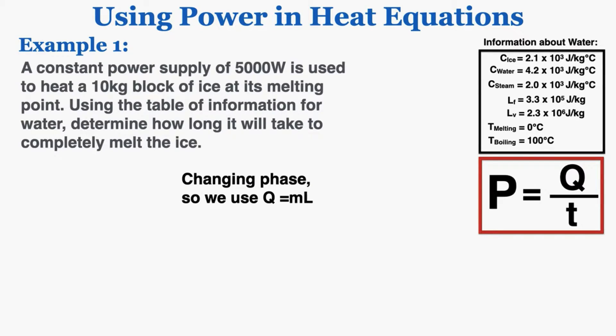Because this is changing phase, we're going to use Q equals M times L. I know that the power is 5,000 watts, the mass is 10 kilograms, the latent heat of fusion for water is 3.3 times 10 to the fifth joules per kilogram, and we're using fusion because we're going from solid to liquid, and we're trying to find the time.